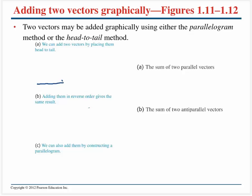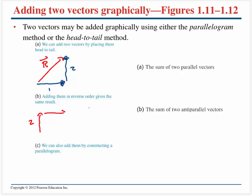Suppose I want to add one vector to another. I take vector number one, lay it out, and then at the head of vector number one I put vector number two. My resultant vector starts at the tail of one and goes to the head of two. Order does not matter — we could start with vector two and add vector one to it, and the resultant looks pretty much the same.